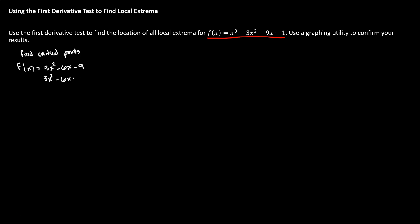The derivative of this function is 3x² − 6x − 9. Setting that equal to zero, we can divide off a factor of 3 to get x² − 2x − 3 = 0. Factoring gives (x − 3)(x + 1) = 0, which tells us x = 3 or x = −1. Those are our two critical points.